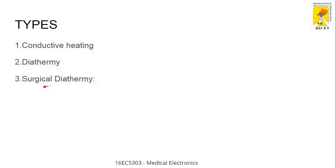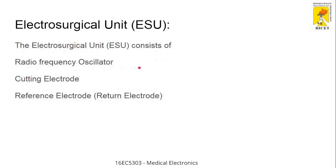Surgical diathermy involves a setup called the Electrosurgical Unit, or ESU. It contains radio frequency oscillators, cutting electrodes, and reference electrodes — these are the components used to build the electrosurgical unit. The key question is: how is the heat generated? The heat is generated using radio frequency oscillators.